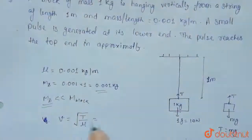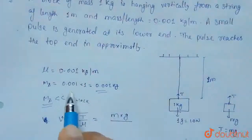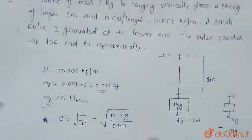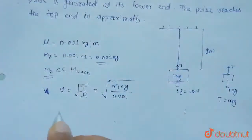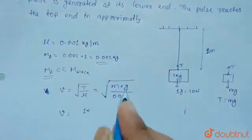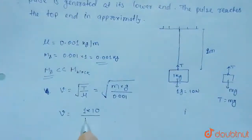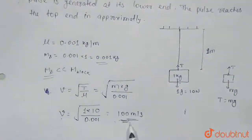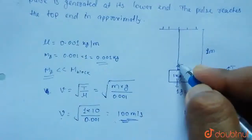Velocity of wave का value निकालते हैं। T = mg = 1 × 10 = 10 N, और mu = 0.001 kg/m। तो velocity = √(10 / 0.001) = √10000 = 100 meter per second। तो string में wave 100 meter per second की speed से ऊपर की तरफ जा रहा होगा।